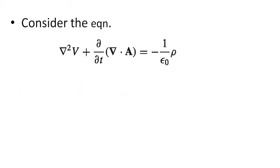Now consider the equation: del-squared V plus partial by partial t of del dot A equals minus rho by epsilon-zero. This equation is satisfied inside the Lorentz gauge, where del dot A equals minus mu-zero epsilon-zero partial V by partial t.